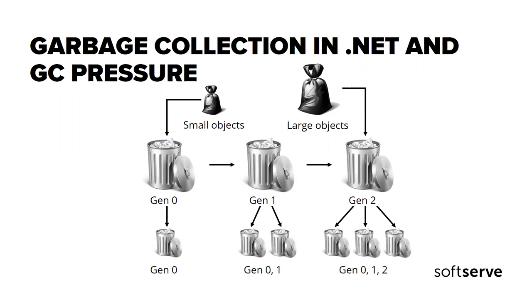When the garbage collector detects that the survival rate is high in a generation, it increases the threshold of allocations for that generation. Collecting a generation means collecting objects in that generation and all its younger generations. A Generation 2 garbage collection is also known as a full garbage collection because it reclaims all objects in all generations — that is, all objects in the managed heap.